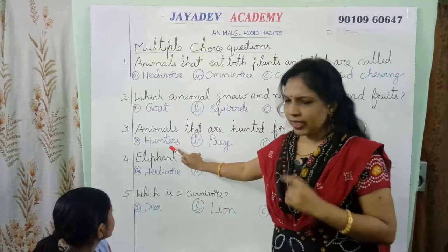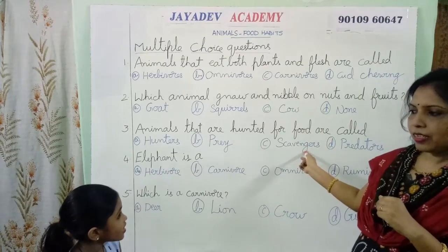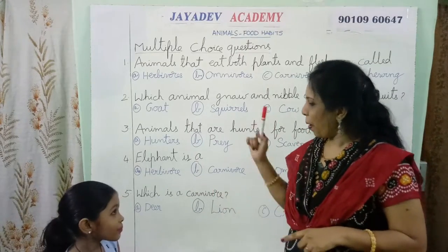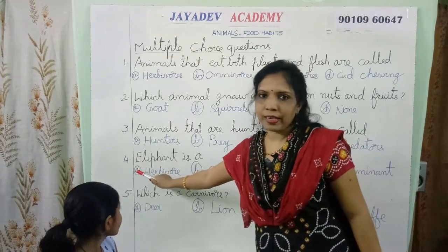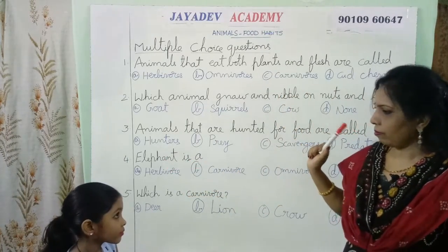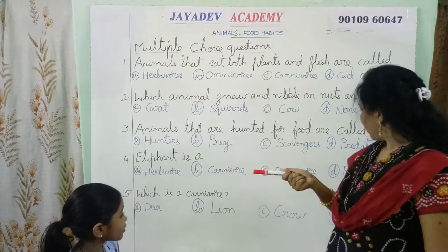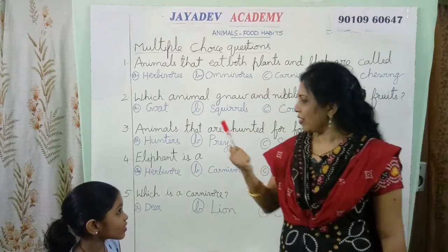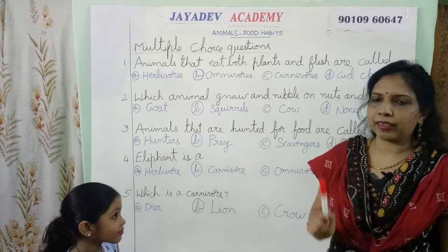And the third one is: animals that are hunted for food are called — is it hunters? Scavengers? Predators? Then the answer is prey. Very good. And the fourth one is: elephant is a — carnivore? Omnivore? Ruminant? No. The correct answer is elephant is a herbivore — it just eats plants.